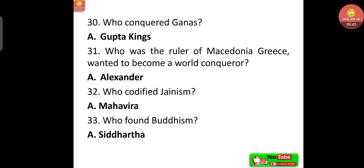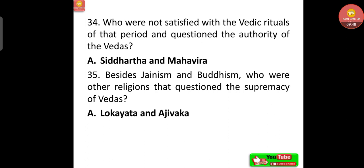Mahavira codified Jainism, and Siddhartha founded Buddhism. Siddhartha and Mahavira were not satisfied with the Vedic rituals of that period and questioned the authority of the Vedas. Besides Jainism and Buddhism, other religions that questioned the supremacy of the Vedas were Lokayata and Ajivaka.